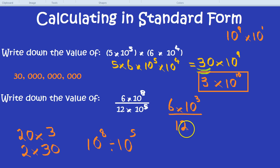Finally, what about this 6 divided by 12? Well, 6 divided by 12 is a half or 0.5. So there we go. We get 0.5 times by 10 to the power of 3.